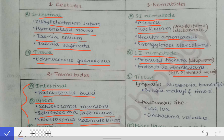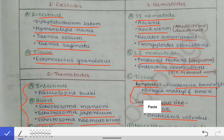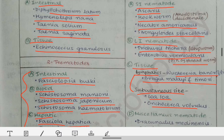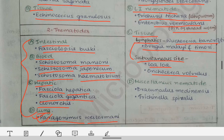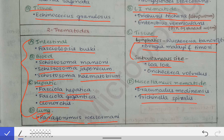In tissues, the nematodes are further divided by lymphatic and subcutaneous sites. In the lymphatics, they are Wuchereria bancrofti, Brugia malayi, and Brugia timori, all residing in lymphatic tissues. The nematodes residing in the subcutaneous site are Loa loa worm and Onchocerca volvulus, all residing in the subcutaneous tissues.